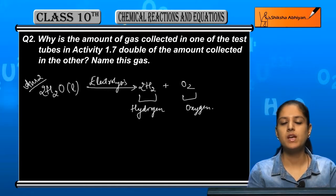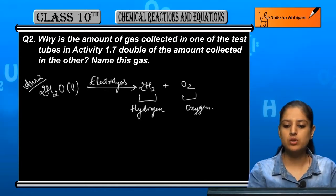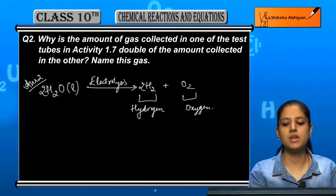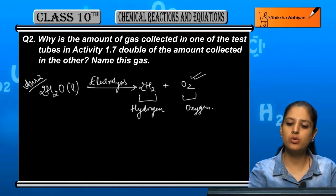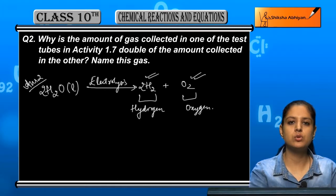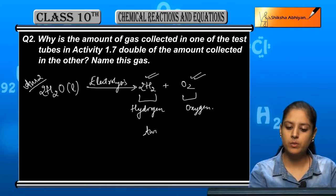In this equation, you can see that where the oxygen is O2, the hydrogen is 2H2. That means twice.